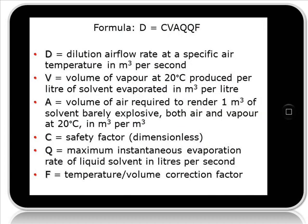D is the airflow rate at a specific air temperature in cubic metres per second — that is what we will be calculating. V is the volume of vapour at 20 degrees C produced per litre of solvent in cubic metres per litre. A is the volume of air required to render one cubic metre of solvent barely explosive, with both air and vapour at 20 degrees C, in units of cubic metres per cubic metre.